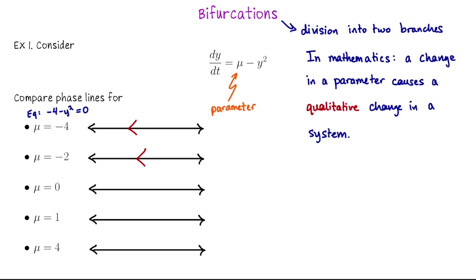As we adjusted our parameter mu from negative four to negative two, nothing changed — we didn't see any qualitative change in the behavior of this differential equation. But what happens now if mu equals zero? If mu equals zero, then dy/dt equals negative y squared, which means there's an equilibrium solution at zero. So we've gone from no equilibrium solutions to picking up one — that's a change in our system. Notice that whenever y is not zero, negative y squared is negative, so zero is a node.